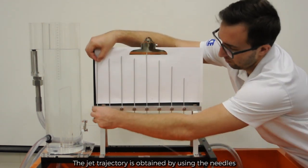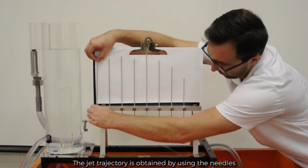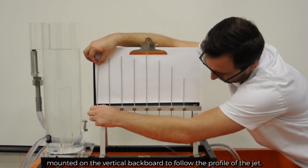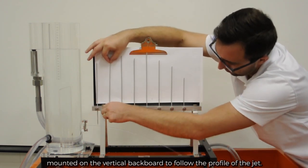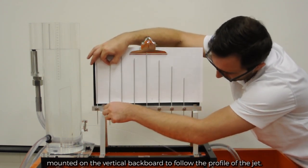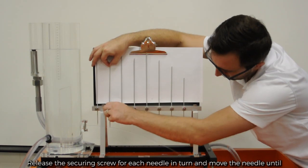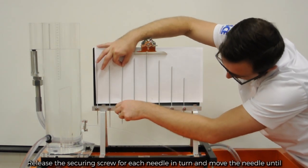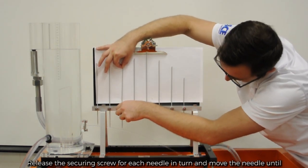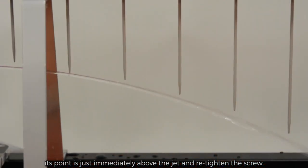The jet trajectory is obtained by using the needles mounted on the vertical backboard to follow the profile of the jet. Release the securing screw for each needle in turn and move the needle until its point is just immediately above the jet and retighten the screw.